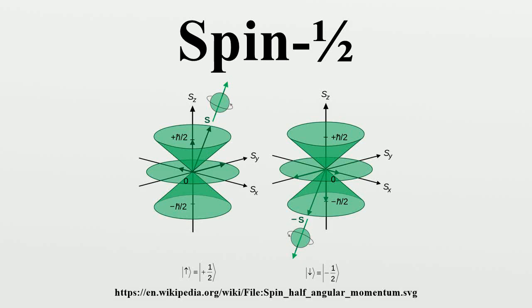In quantum mechanics, spin is an intrinsic property of all elementary particles. Fermions, the particles that constitute ordinary matter, have half-integer spin.